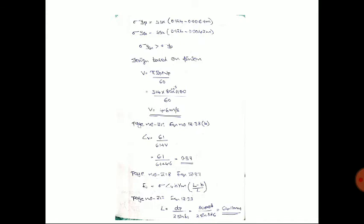Going to page 219 to find the velocity factor. Since the problem does not specify how the teeth are cut, we take the equation for generated teeth: Cv = 6.1 / (6.1 + v). Substituting v = 4.6 m/s, we get Cv = 0.57.